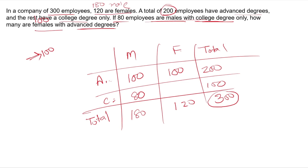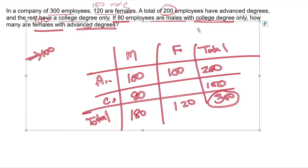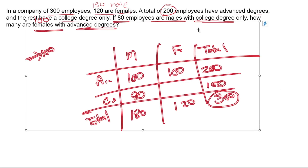Now let me discuss the general structure of this method. Mostly there are two binary categories — call them A and B. Actually there are four units in the matrix.